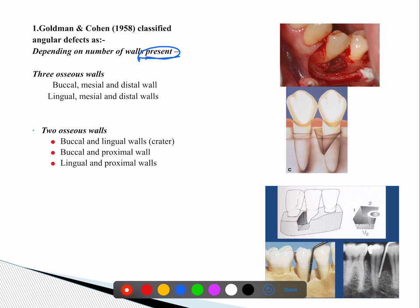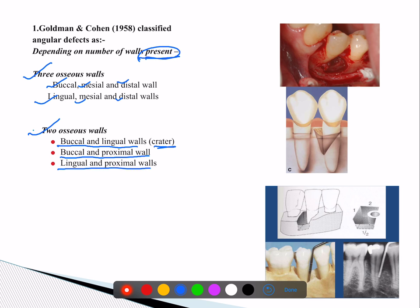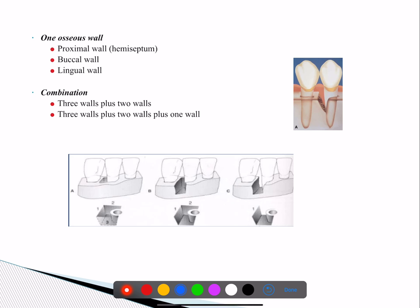Three osseous walls — whether buccal-mesial-distal or lingual-mesial-distal — constitute a three-wall defect. A two-wall defect exists when only buccal and lingual walls are present; this is called a crater. All craters are two-wall defects, but not all two-wall defects are craters. One-wall defects where proximal walls are present are called hemiseptal defects, but buccal or lingual wall alone can also be present — so all hemiseptal defects are one-wall defects, but not all one-wall defects are hemiseptal.